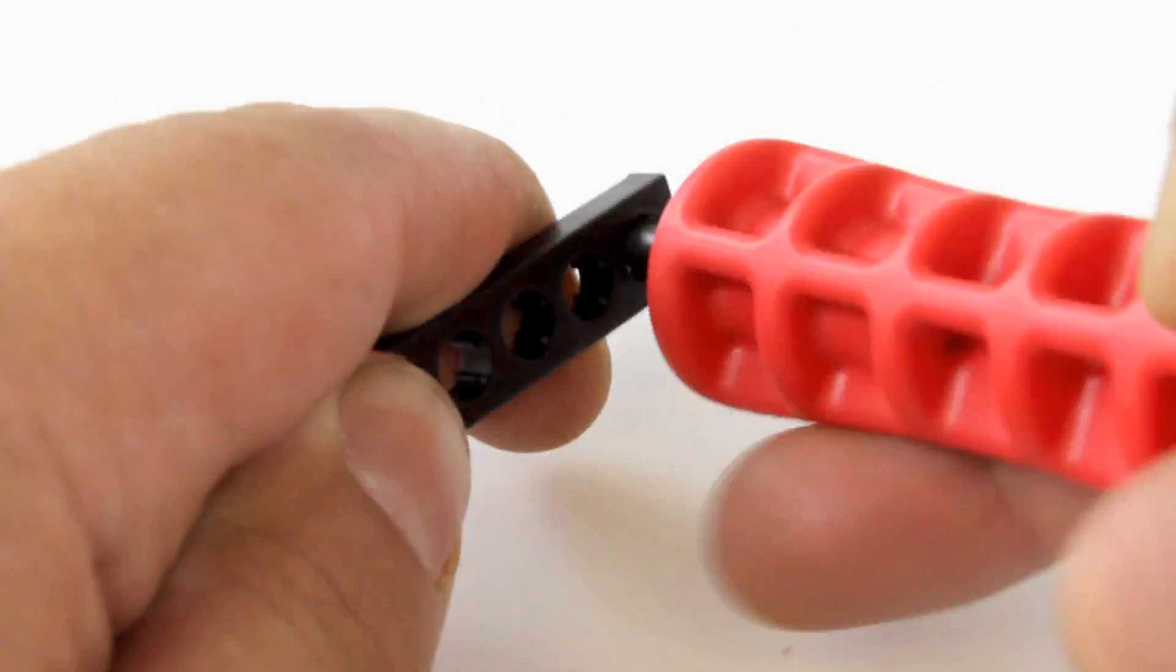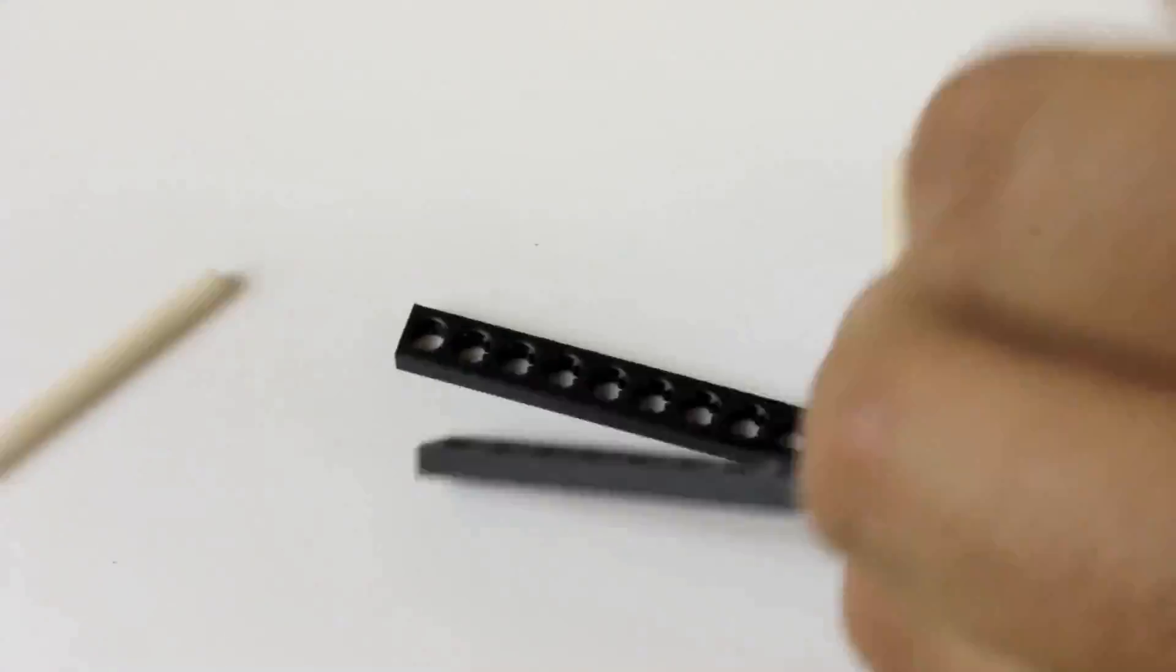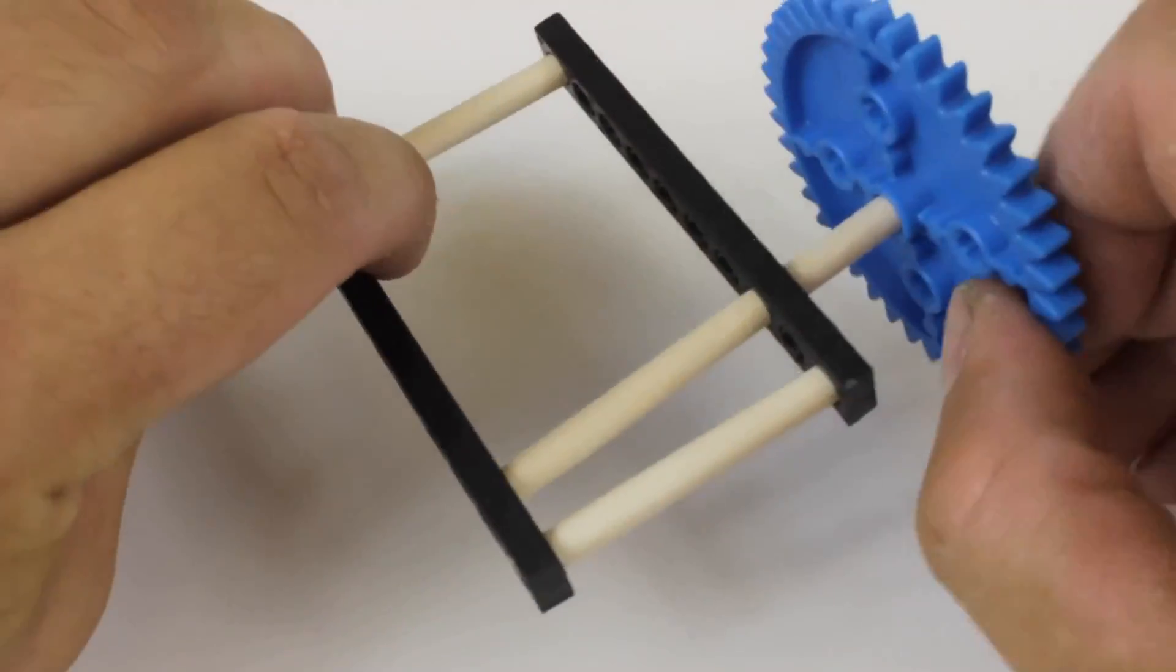Just twist the reamer back and forth to ream out a hole. Reaming out a hole will make it so it no longer holds a dowel, so don't ream out holes you want dowels to stay pressed into. Only ream out holes you want dowels to slide or rotate in.